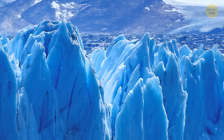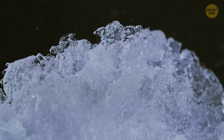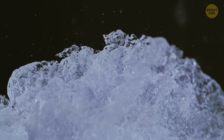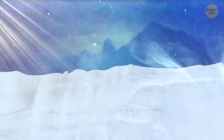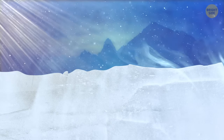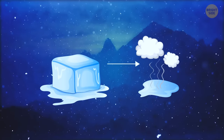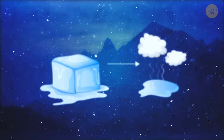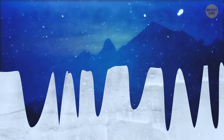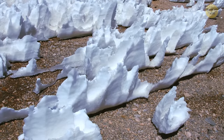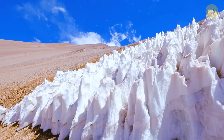Such jagged structures form due to the process called sublimation. It's a bit similar to melting, but in this case, the sun turns the snow directly into vapor without melting it first. In other words, the ice skips the liquid stage and goes from its solid form to gas. Curved areas of the surface heat up and sublimate faster than others, forming dents. That's how penitentes get formed, and that's why they lean in the direction of the sun's rays.